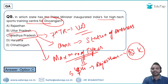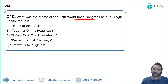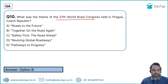Question 11: The 27th World Road Congress was held in Prague, Czech Republic. You have to identify its theme. The theme for the 27th World Road Congress was 'Together on the Road Again.'